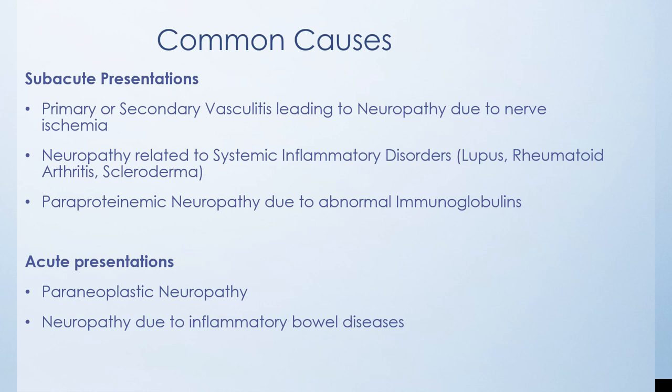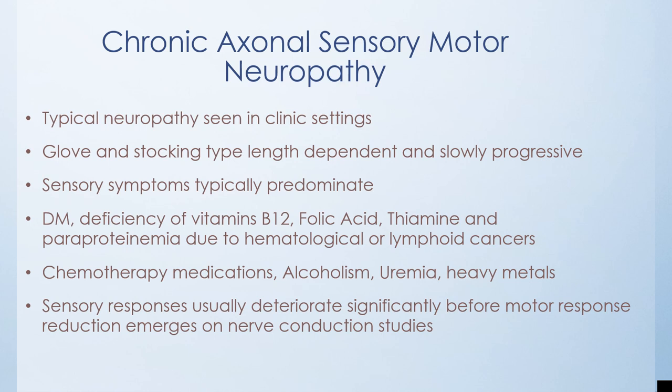Common causes include primary or secondary vasculitis causing nerve ischemia, neuropathy related to systemic inflammatory disorders like lupus, rheumatoid arthritis, or scleroderma. Paraproteinemic neuropathies seen in lymphoid or hematological malignancies due to abnormal immunoglobulin can also cause subacute axonal neuropathies. Acute presentations are seen in paraneoplastic neuropathy or neuropathy due to inflammatory bowel disease like celiac disease. Chronic axonal forms affect sensory and motor nerve fibers in a glove-and-stocking length-dependent pattern, commonly seen in diabetes, vitamin B12, folate, or thiamine deficiencies, or paraproteinemia.